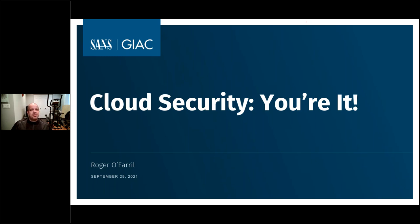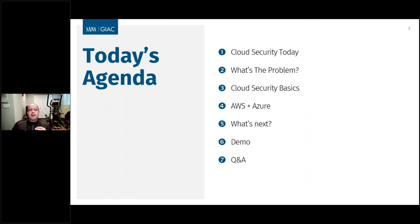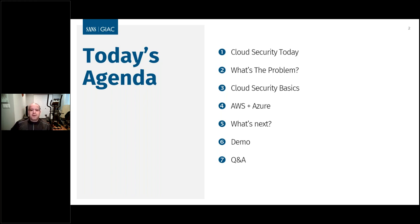So that's what we're going to center the discussion around today. We're going to talk about why we're here — what's the problem we have with security in the cloud? We're going to talk about some of the basics you should be considering as soon as you get access to whatever environment you're going to be responsible for securing. We'll frame our conversation in the AWS and Azure world, sprinkle in a little Google, and then talk about what's next as you start that cloud security journey.